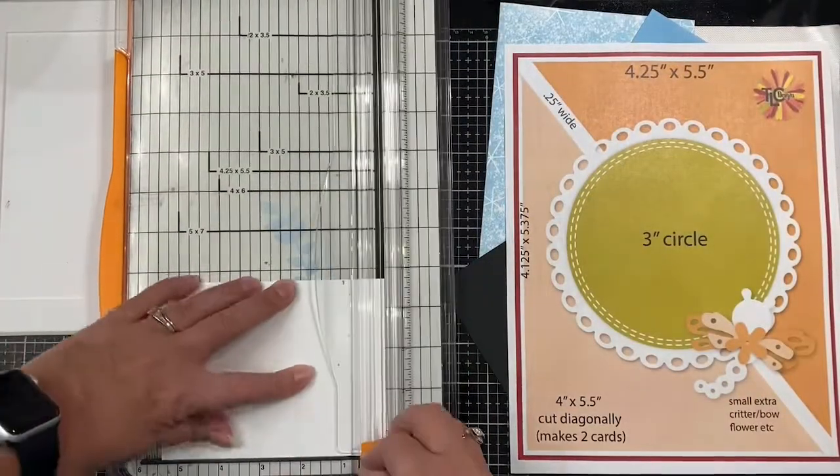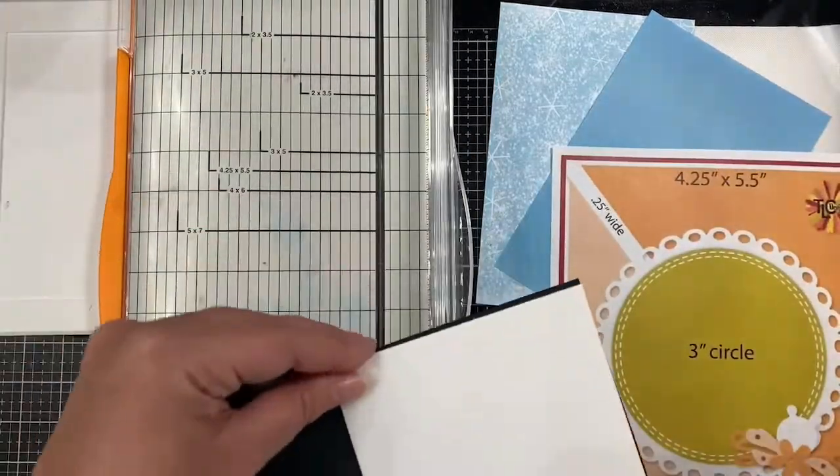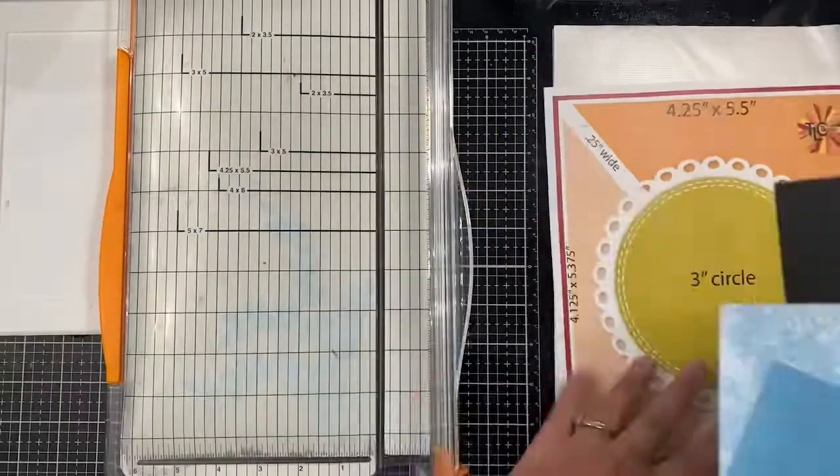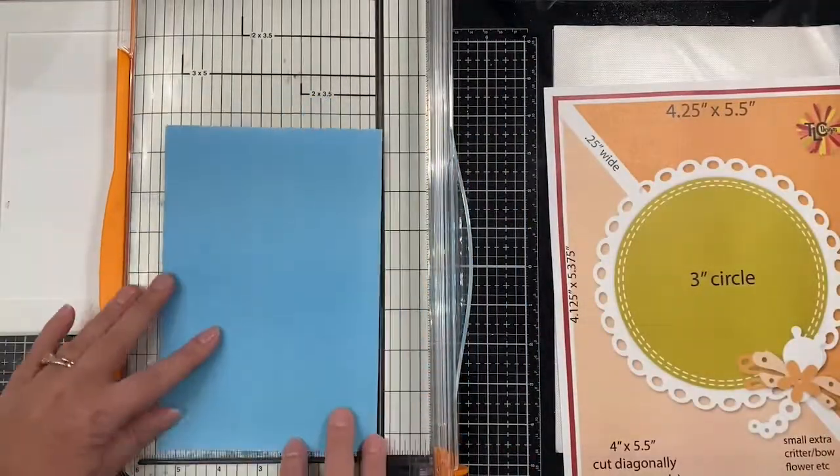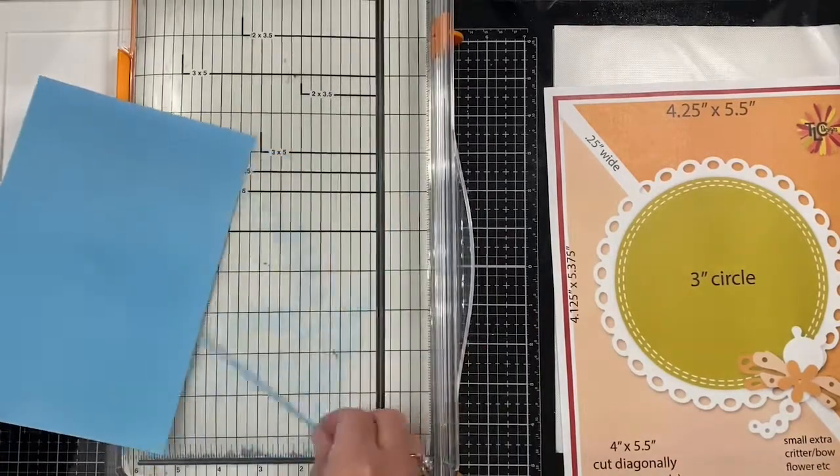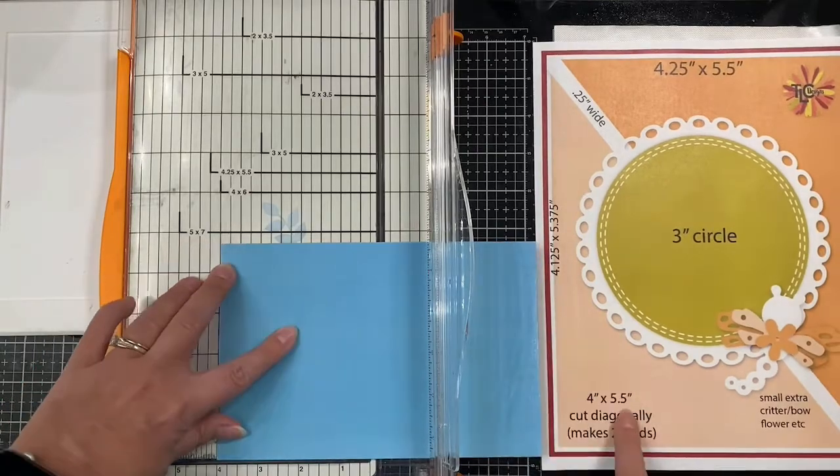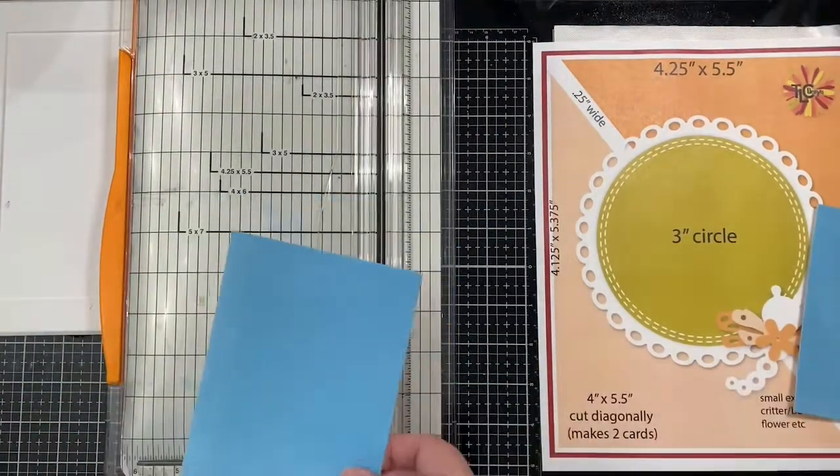So today I'll be sharing two different cards with you. The first card is just a basic side fold card using the teal blue papers. I'm using a black card base that is A2 size which is four and a quarter by five and a half inches, and I've cut a white mat to be an eighth of an inch smaller than the base. The measurements are listed on the sketch.